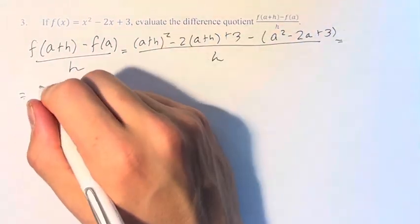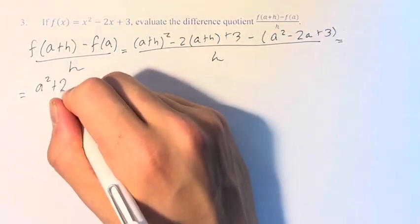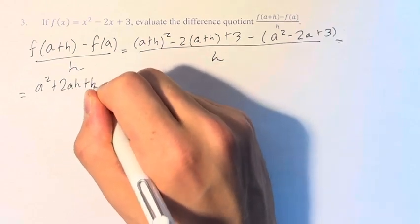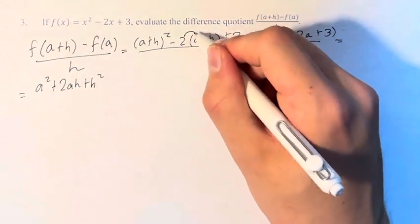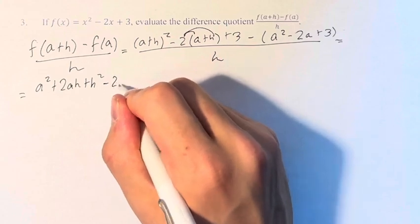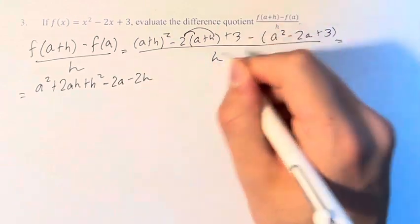(a+h)² is a² + 2ah + h². Minus 2a minus 2h plus 3.